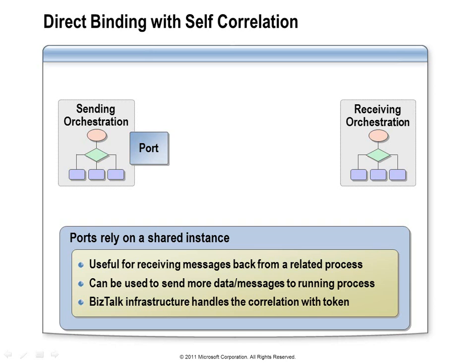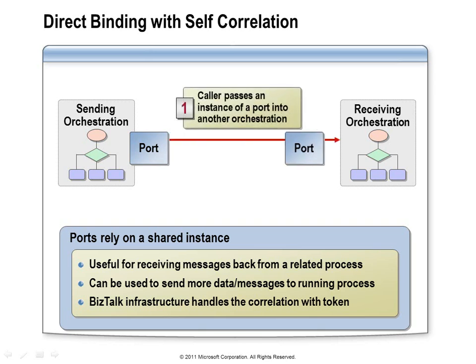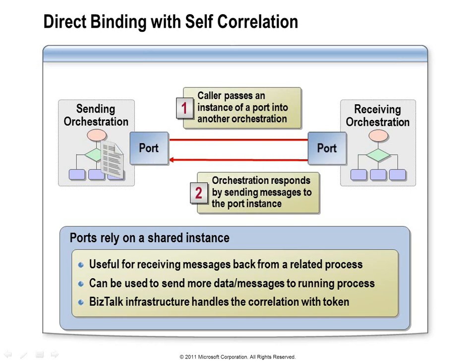You can set this up by creating a direct bound receive port in the orchestration that will be initiating the call, and then pass that as a parameter via the start orchestration shape. This allows the first orchestration to continue executing while the second orchestration initializes and begins executing. When the second orchestration is ready to pass information back, it can simply send a message through that port object it received when it was initialized. From the second orchestration's point of view, that logical port will appear as a send port. You can even pass multiple port objects or a port that defines multiple operations.